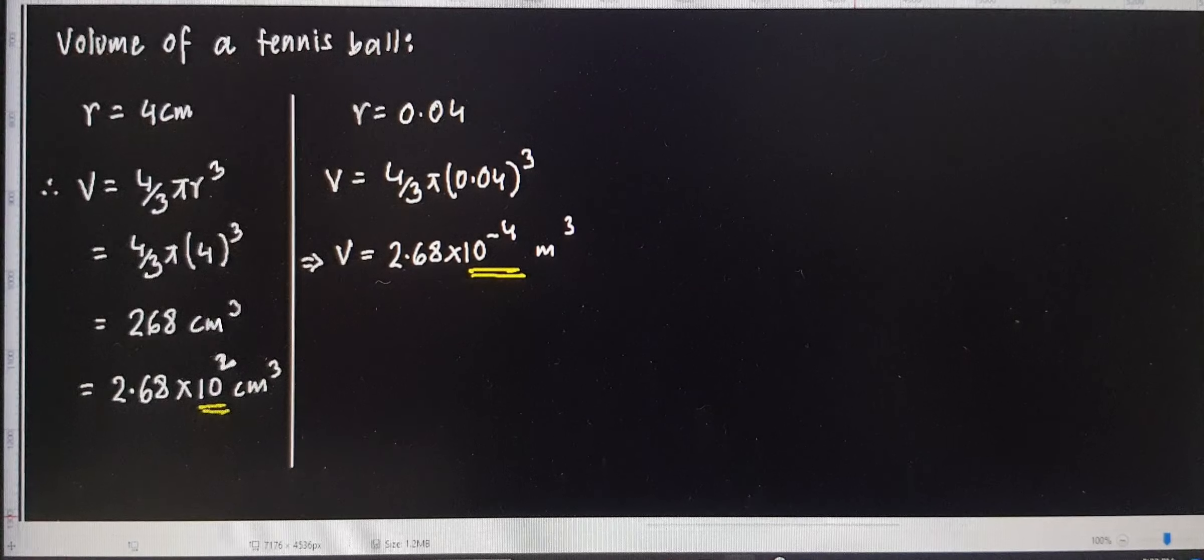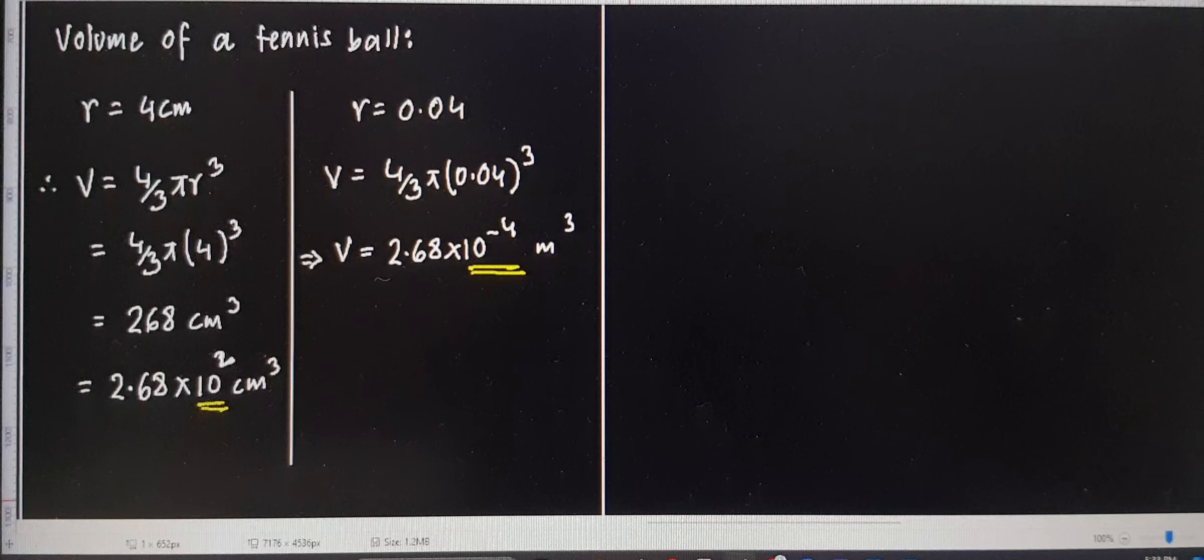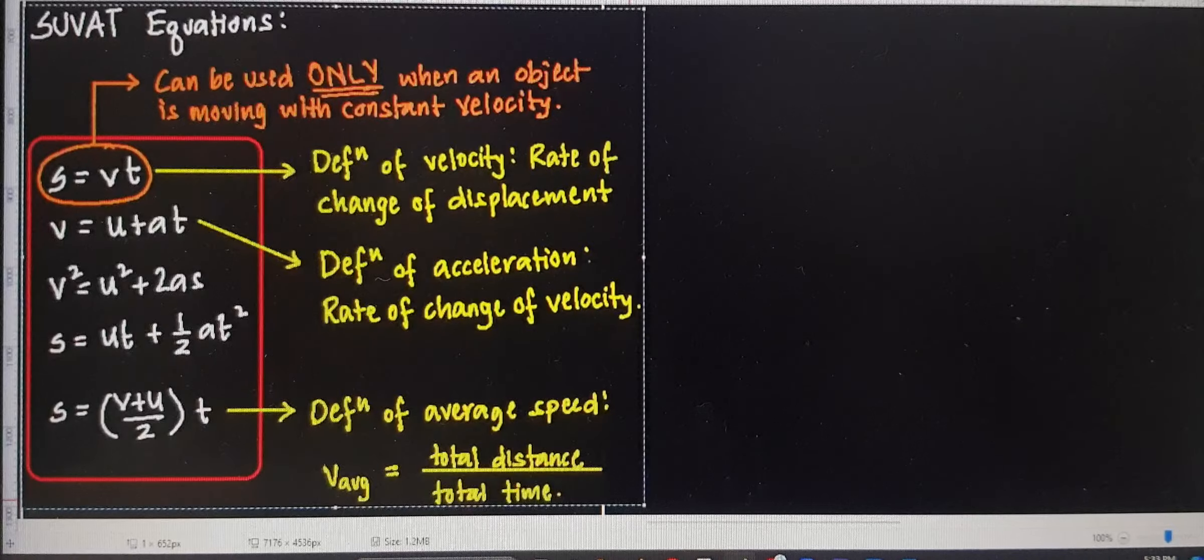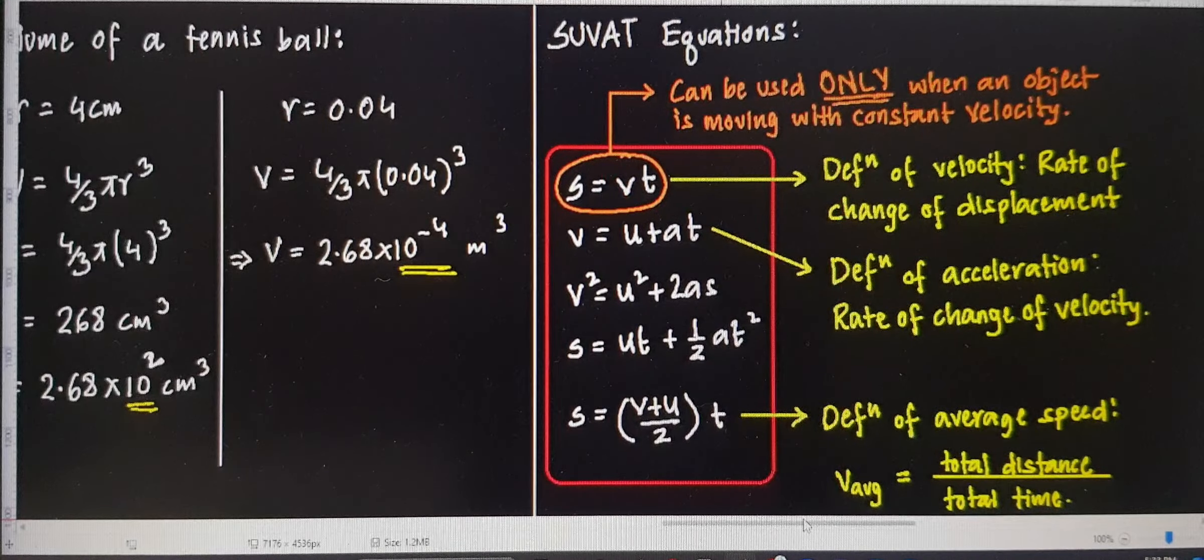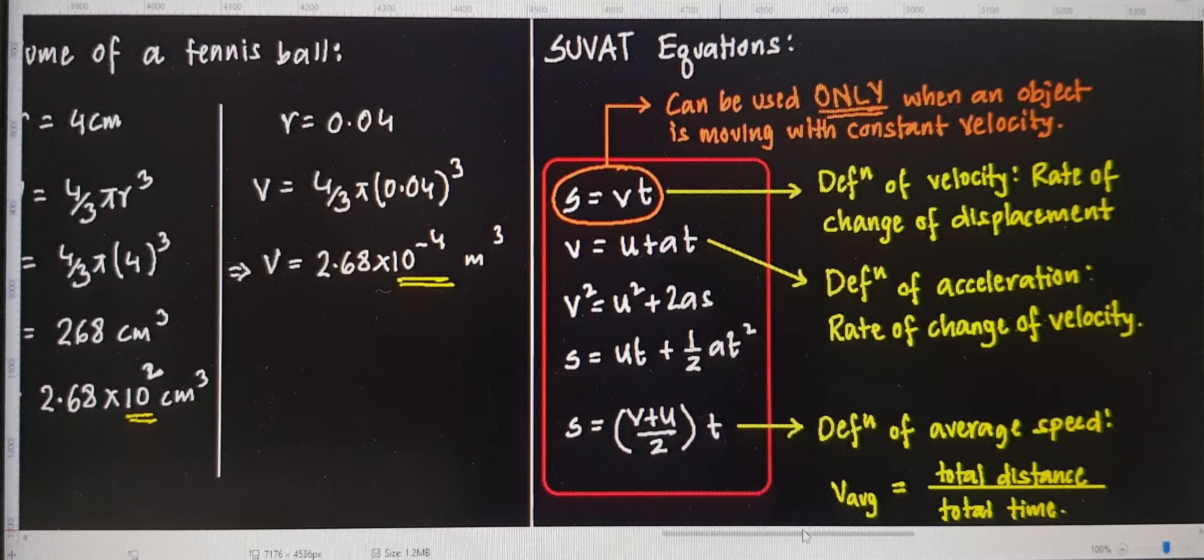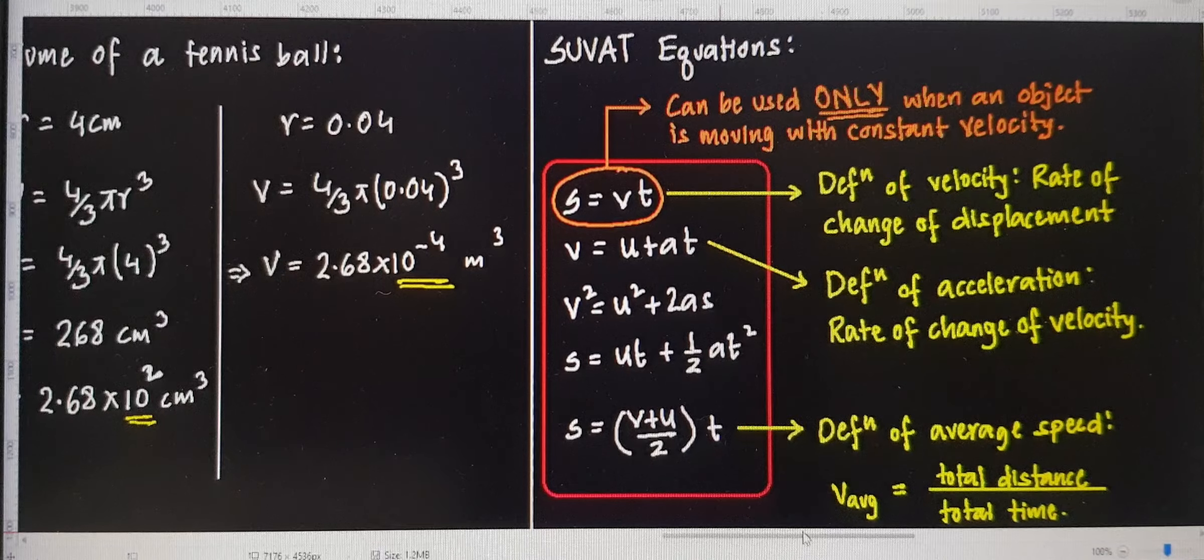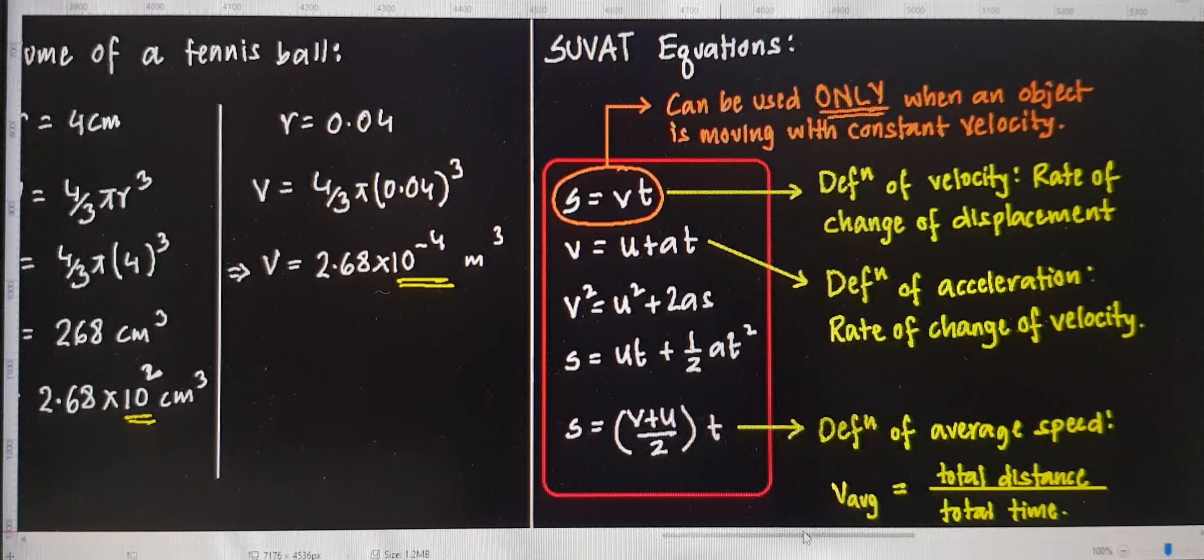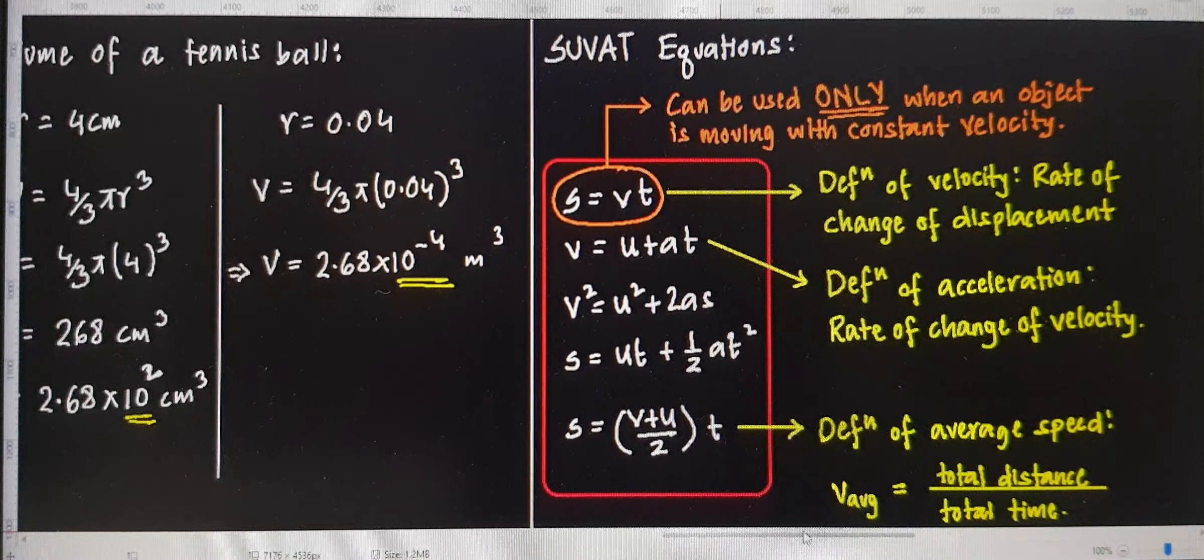I can review some of the stuff that we already covered in O levels that you are required to know in AS. Right? And the first thing is this wonderful set of equations. We are familiar with SUVAT equations, right? The equations of motion. So let's go through each one of them individually. So S equals to VT. This comes from the definition of speed or velocity. Right? Yes.